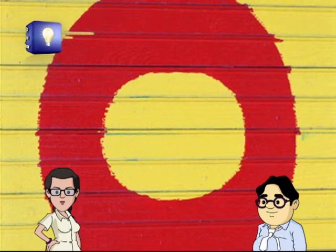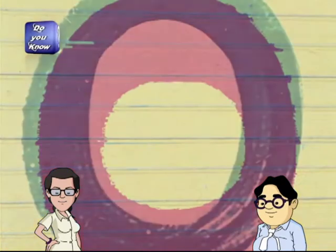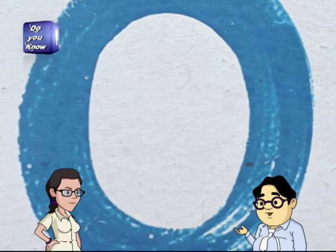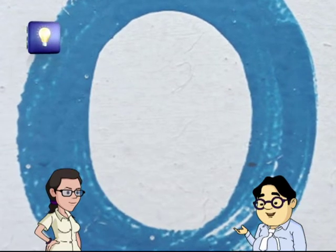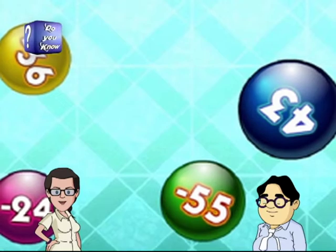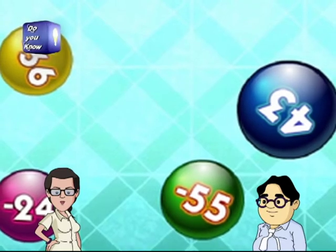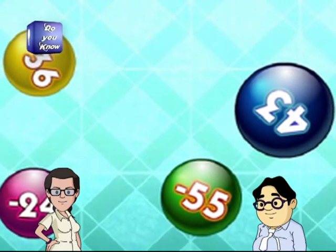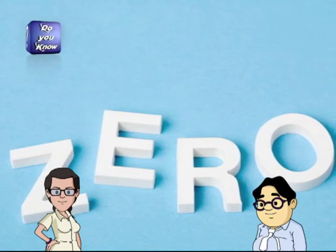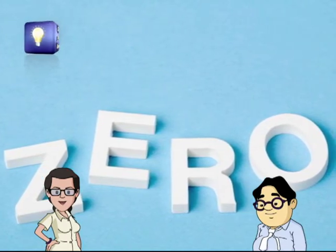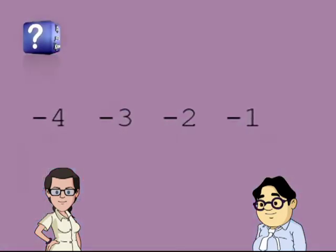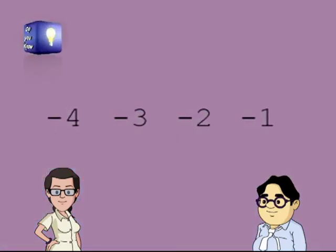The concept of 0 as an actual value, along with the concept of negative numbers, first appeared in India around 600 AD. It was only in modern times that the value of 0 and negative numbers was fully understood.